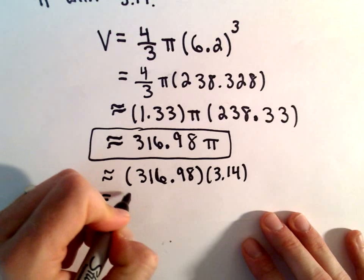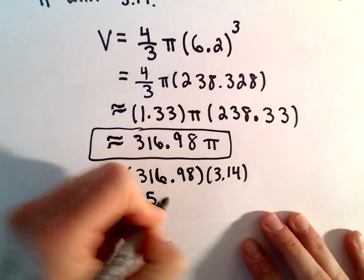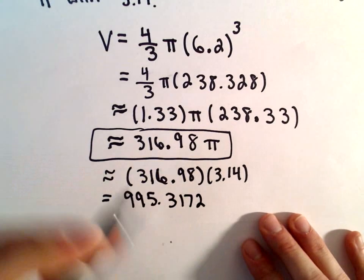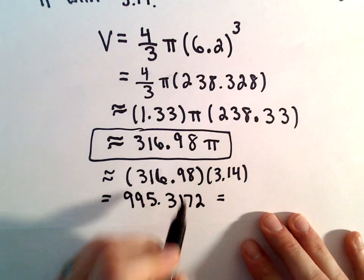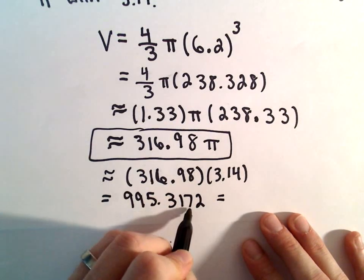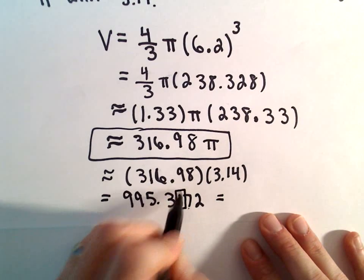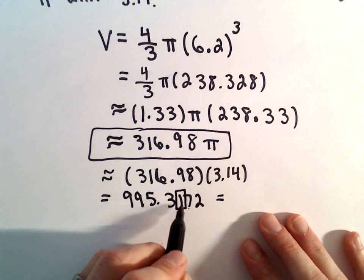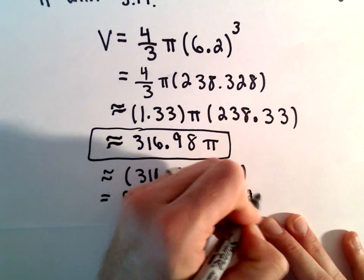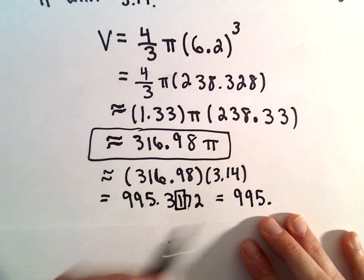I'm getting this to equal 995.3172 and again, if we round to the nearest hundredth because of the 7 we'll have to round the hundredths digit up one. So we'll have 995.32.